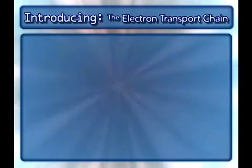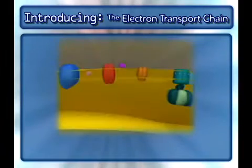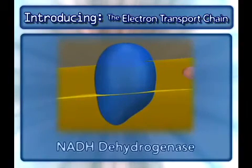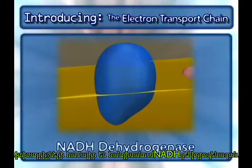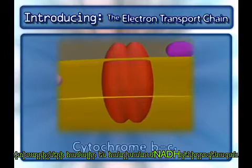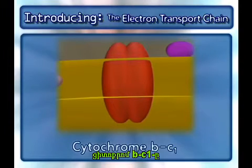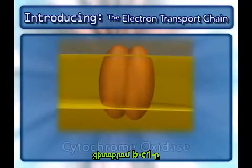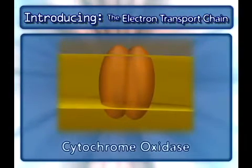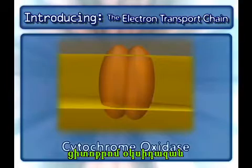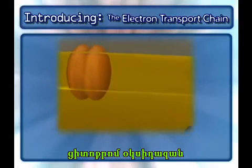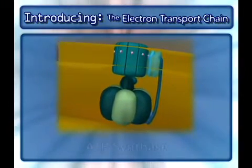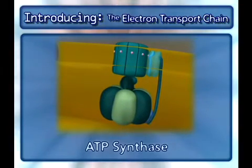The following complexes are found in the electron transport chain: NADH dehydrogenase, cytochrome BC1, cytochrome oxidase, and the complex that makes ATP — ATP synthase.